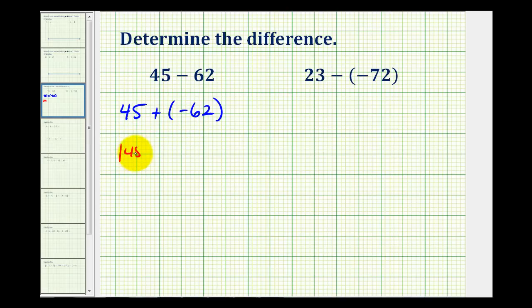The absolute value of 45 is 45, and the absolute value of negative 62 is positive 62. Now we're going to subtract the smaller number from the larger number. So we'll have 62 minus 45, and we're subtracting because the integers we're summing had different signs.